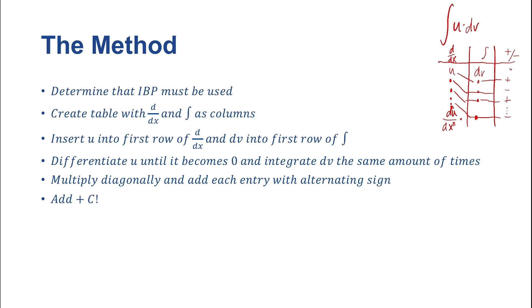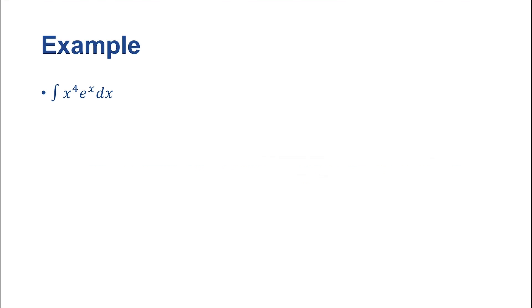This may have seemed fairly confusing, so let's do an example. Let's say I want to take the integral of x^4 · e^x dx. We have a fourth-order monomial x^4, so if I did traditional integration by parts I would need to do that quite a lot of times. But now we have this tabular method, and that's going to be helpful.